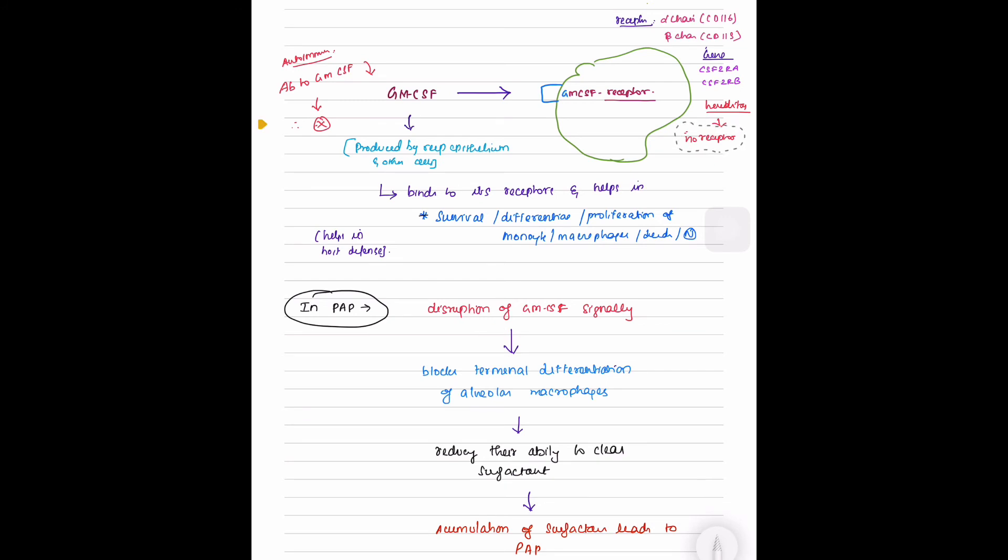It results in destruction of GM-CSF signaling and blocks terminal differentiation of alveolar macrophages, thereby reducing their ability to clear surfactant, leading to accumulation of surfactant which leads to pulmonary alveolar proteinosis.